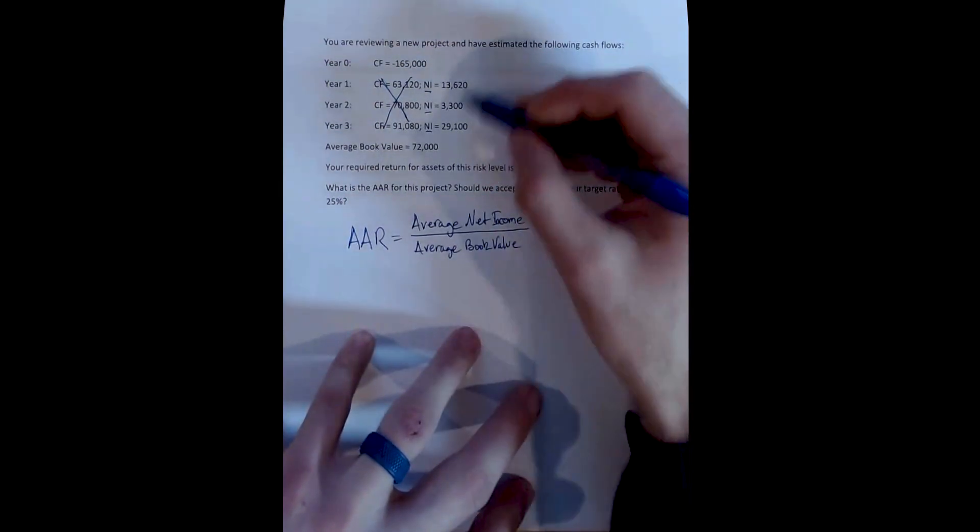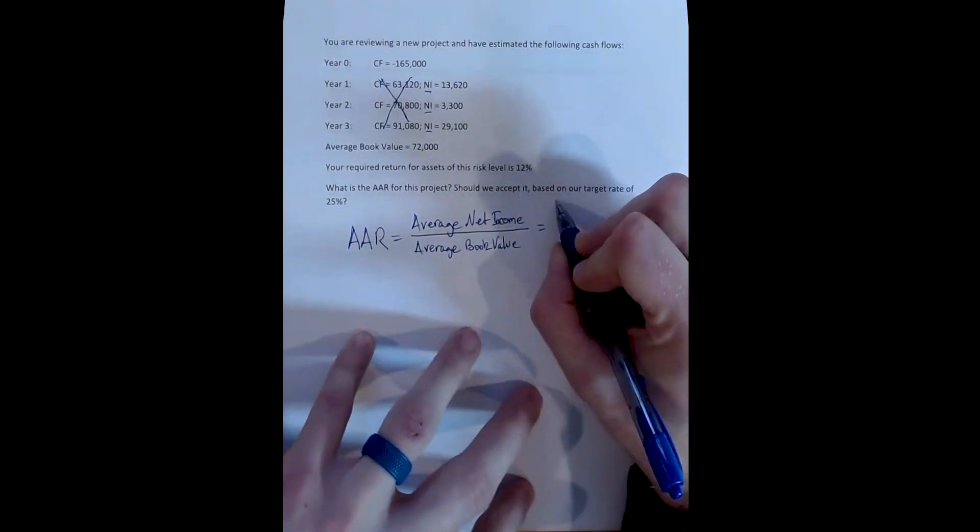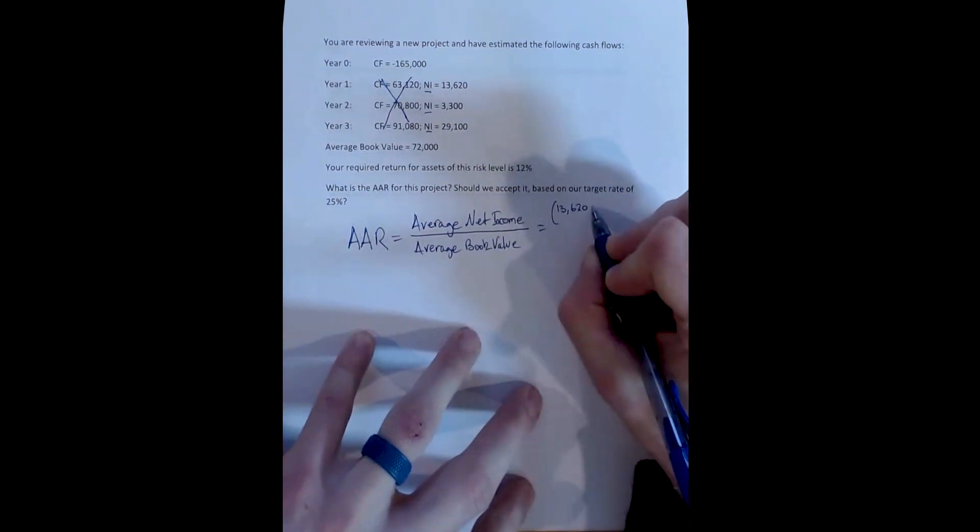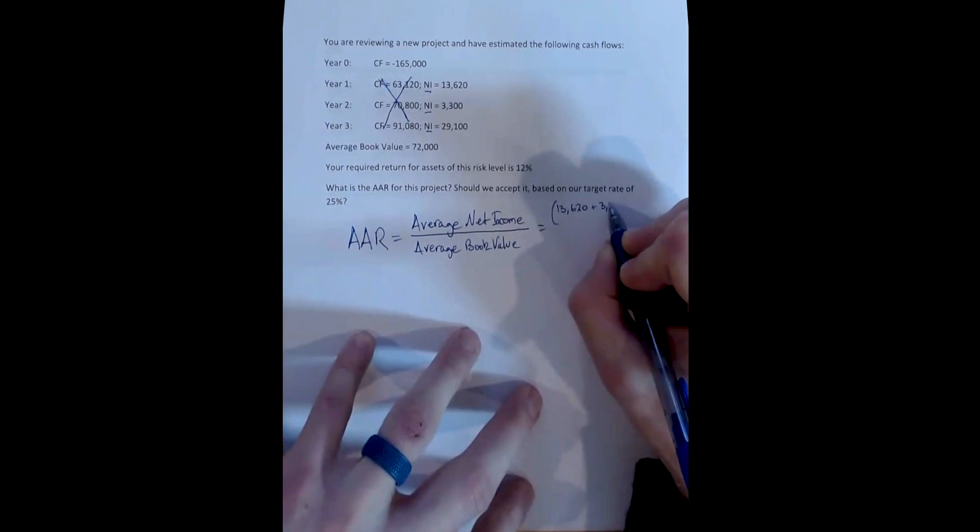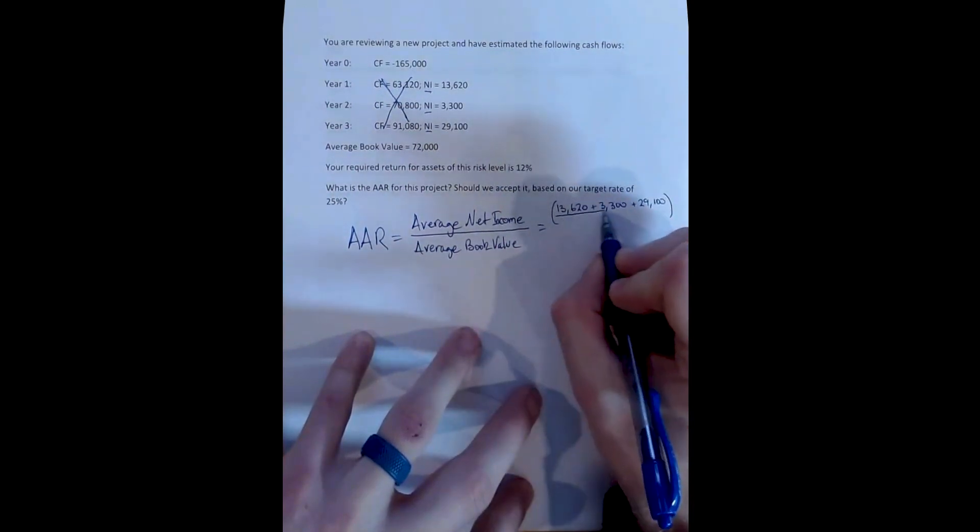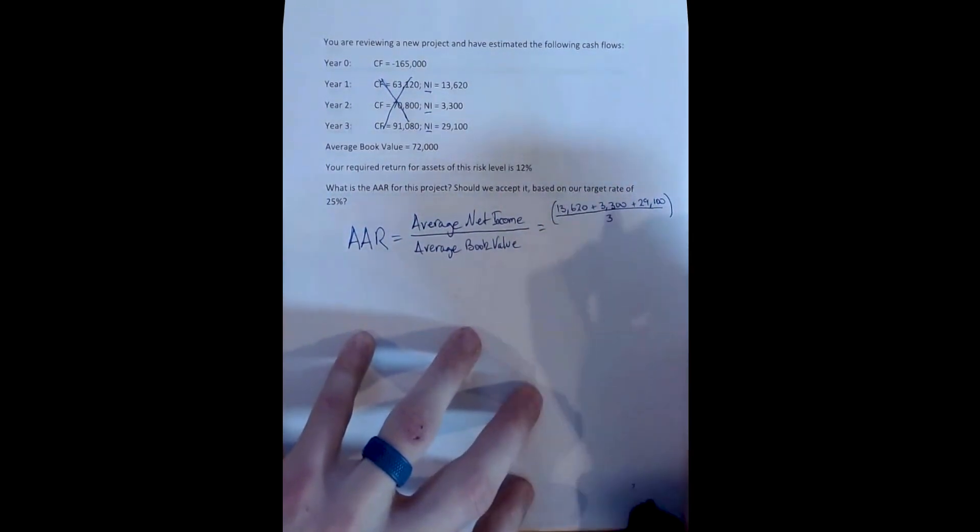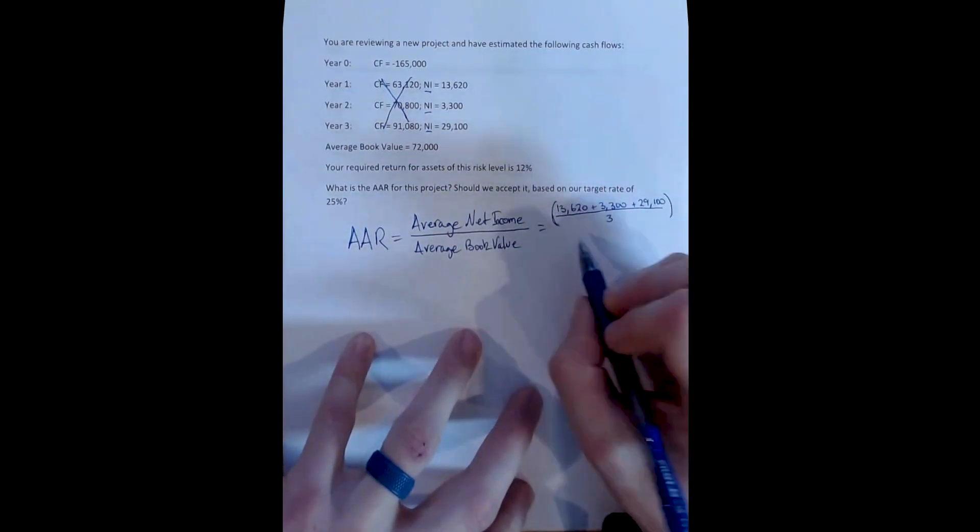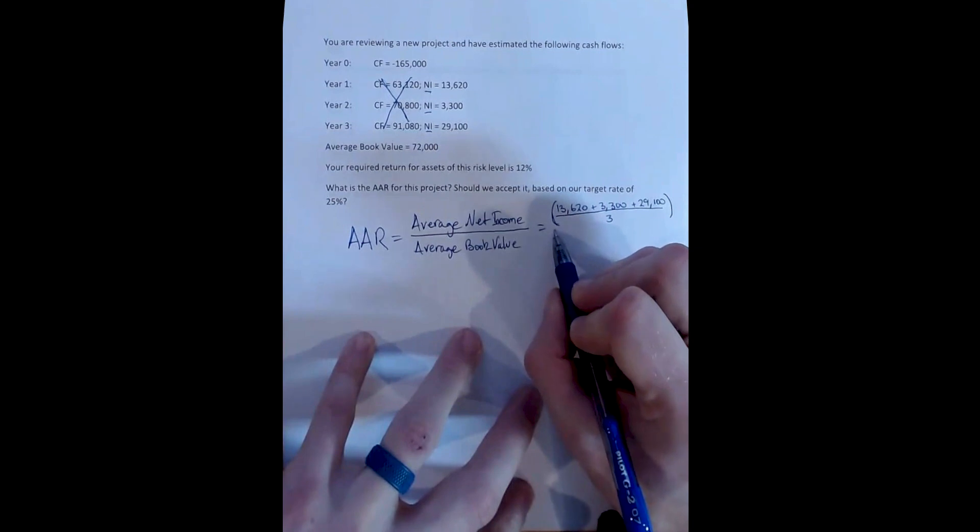So we can take our net incomes here to solve for the Average Accounting Return. We can say 13,620 plus 3,300 plus 29,100. And we're just taking the simple arithmetic average, and all that means is we add the numbers up and we divide by the number. So we divide by the 3, because there are 3 values.